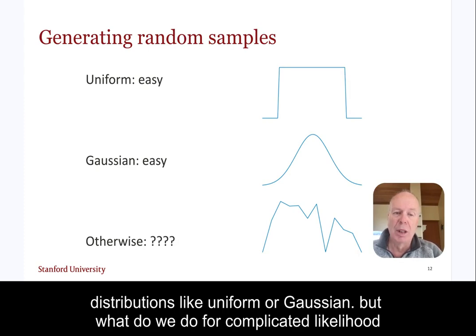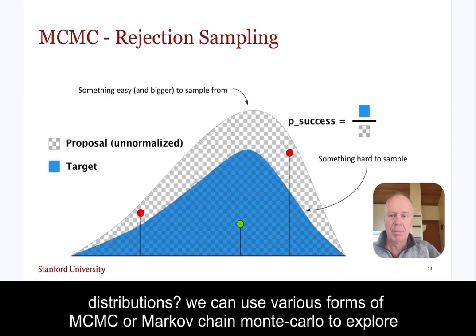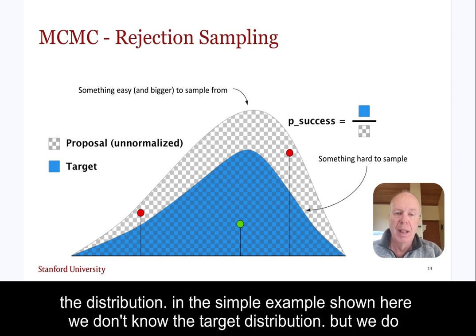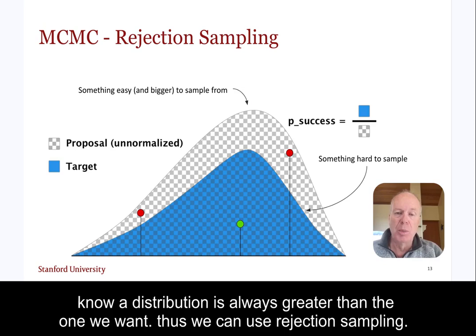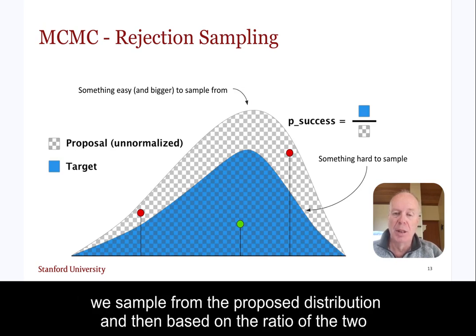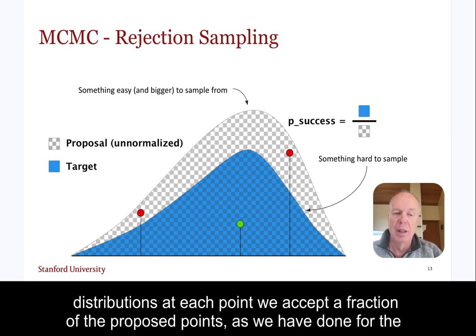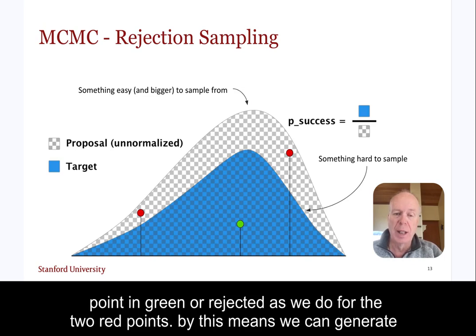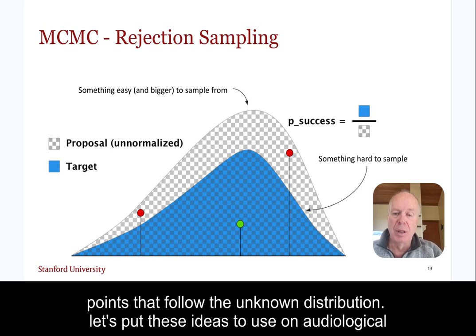But what do we do for complicated likelihood distributions? We can use various forms of MCMC, or Markov chain Monte Carlo, to explore the distribution. In the simple example shown here, we don't know the target distribution, but we do know a distribution that is always greater than the one we want. Thus we can use rejection sampling. We sample from the proposed distribution, and then based on the ratio of the two distributions at each point, we accept a fraction of the proposed points — as we have done for the point in green — or reject them, as we do for the two red points. By this means, we can generate points that follow the unknown distribution.